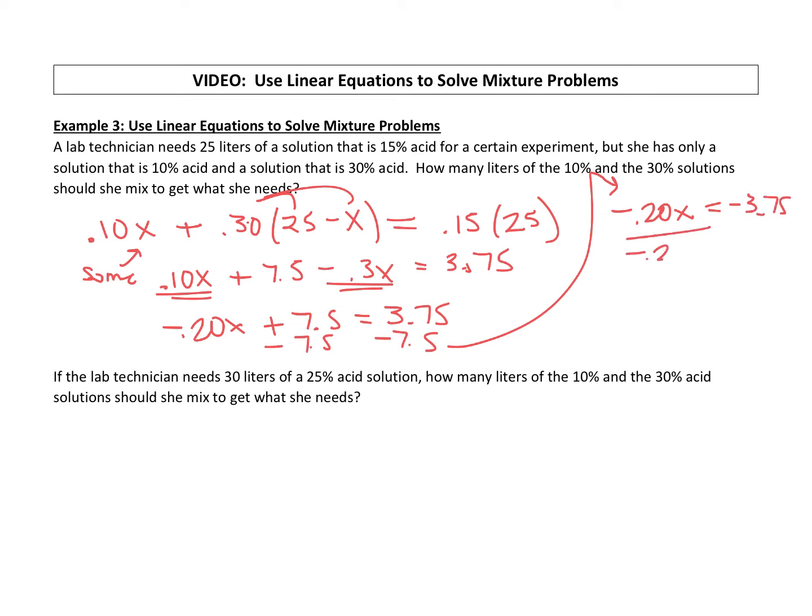That gives us negative 0.20x equals negative 3.75. Divide both sides by negative 0.20, that cancels, so x is 18.75.